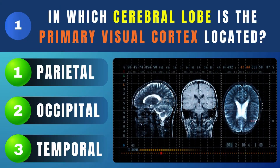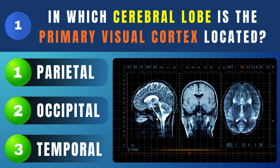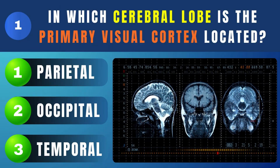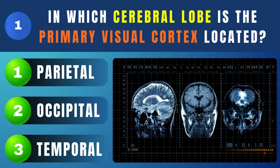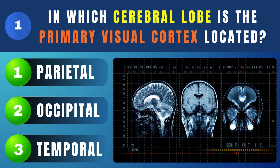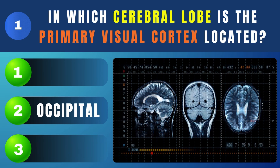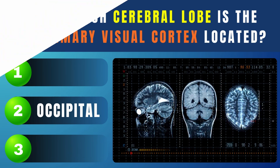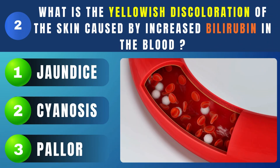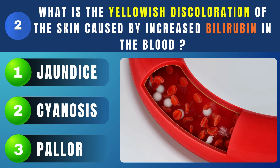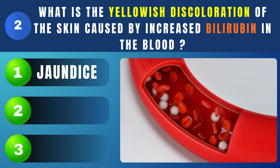In which cerebral lobe is the primary visual cortex located? Occipital. What is the yellowish discoloration of the skin caused by increased bilirubin in the blood? Jaundice.